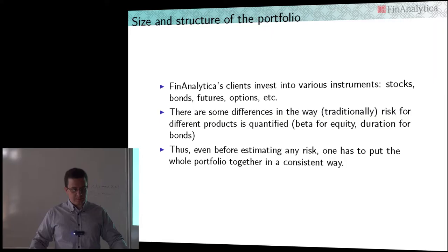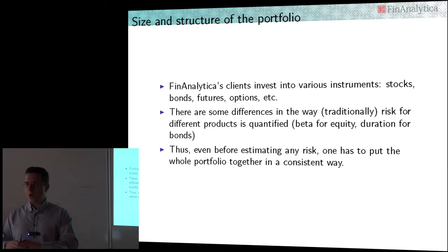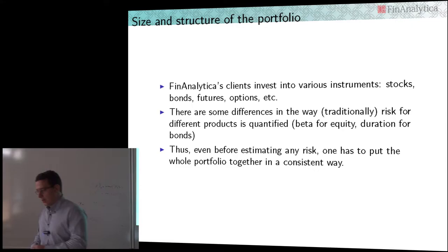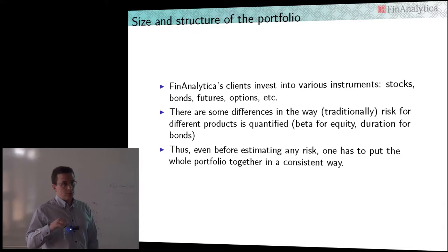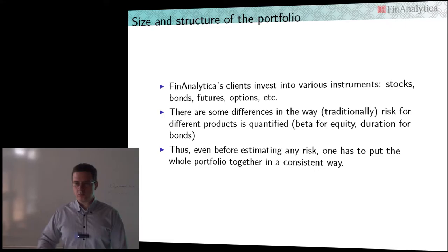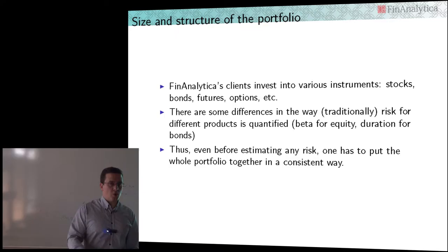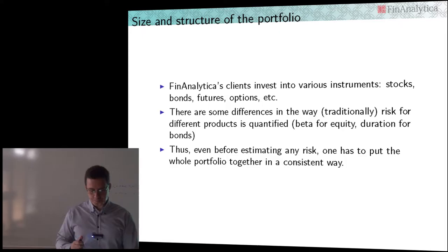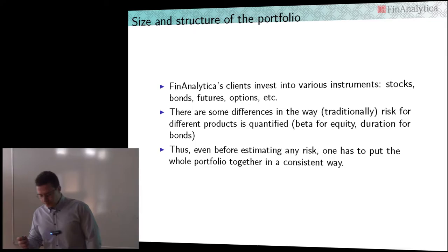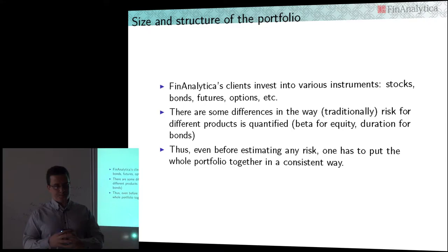The problem is that the same client, when talking about their bond portfolio, looks at something completely different. There is no definition of beta for a bond. For bonds, they look at duration — a property of the bond that tells you how long it will take to get your money back. A duration of three means that in three years you get your money back. So the problem happens when you want to combine the two portfolios — your equity portfolio and your bond portfolio. What is the way to look at risk now? Is it beta? Is it duration? Not so much. This is where we come in as quantitative analysts.